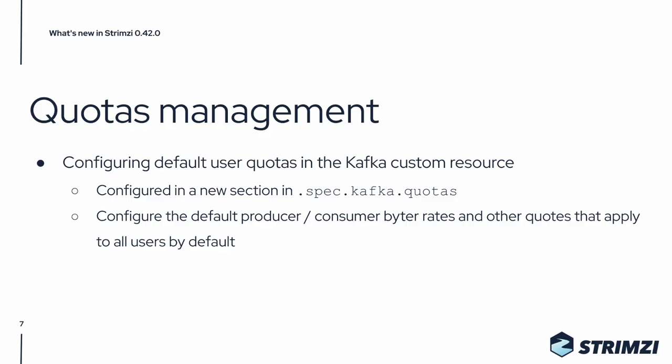Another big improvement in this release comes to the quotas support. If you use Kafka's default quotas plugin, you can now configure the default user quotas directly in the Kafka custom resource. It allows you to configure the default producer or consumer byte rates, as well as some other quotas, and apply them to all users by default.